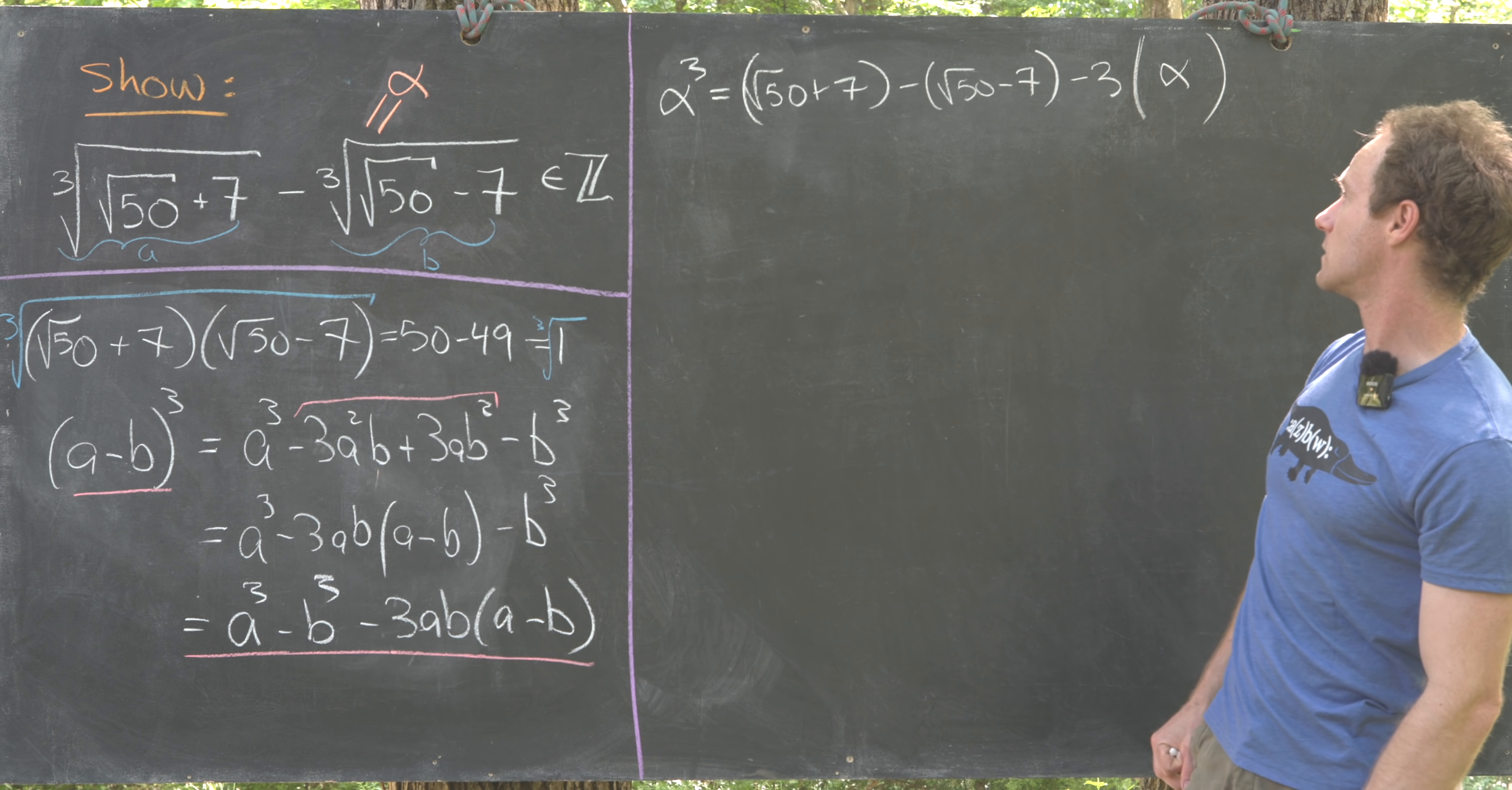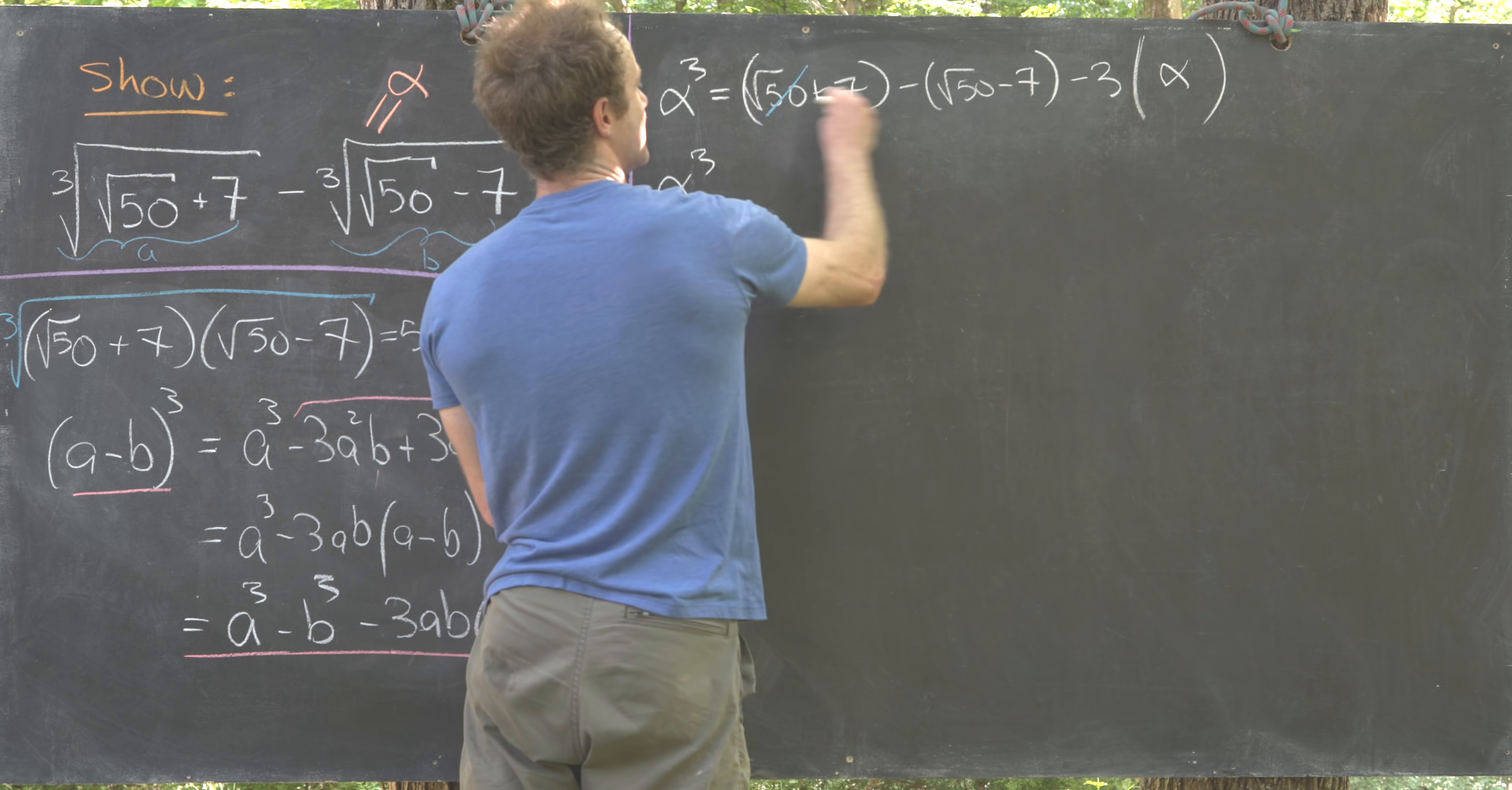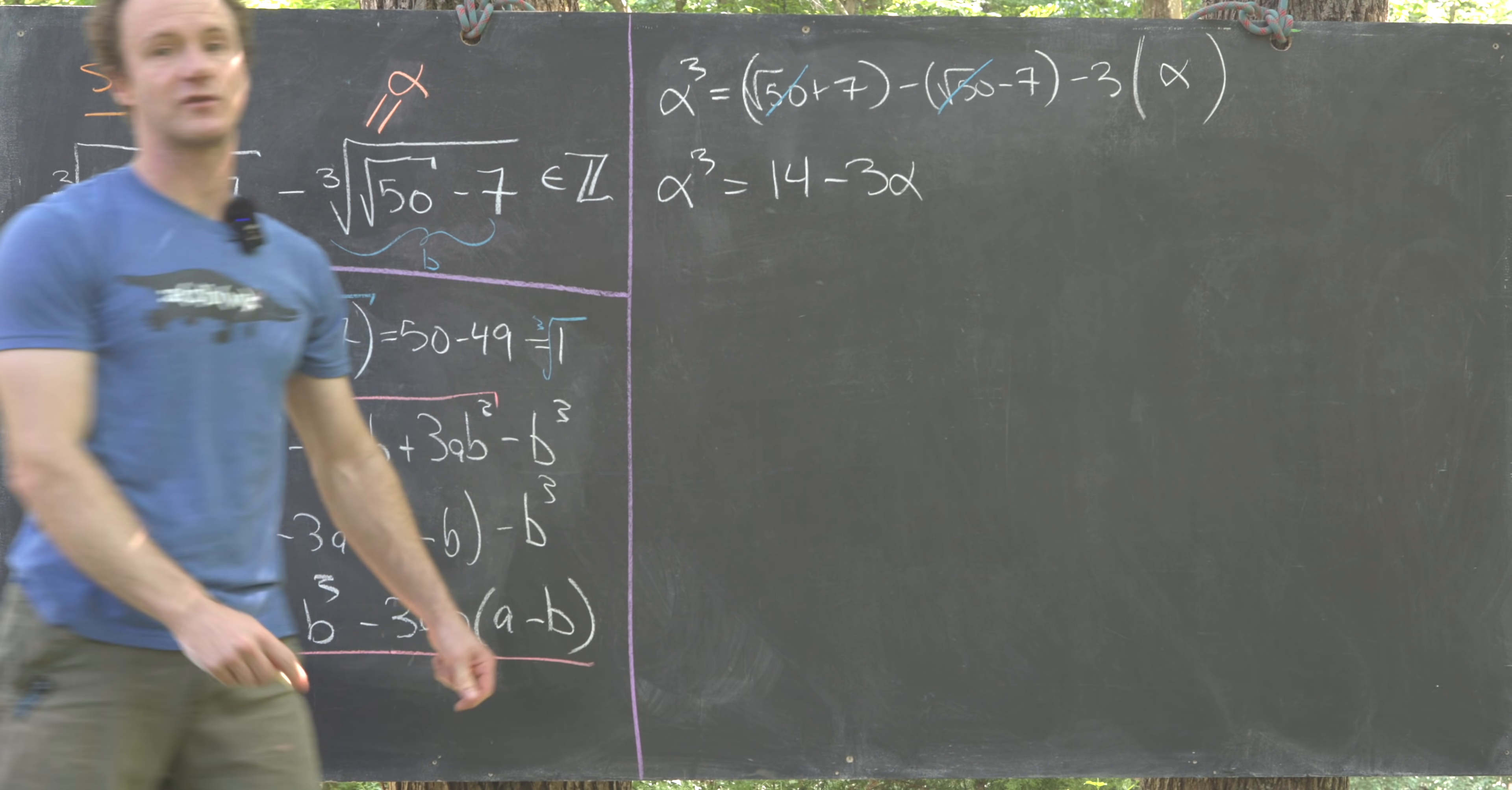Now we've got a cubic polynomial in alpha. Let's see how this simplifies. We'll have alpha cubed and then this square root of 50 minus square root of 50 will cancel. The sevens will build up to give us 14 minus 3 alpha after bringing that down.